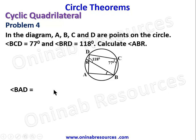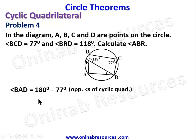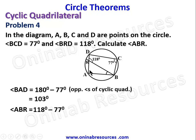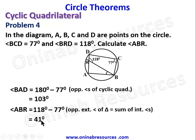Since ABCD is a cyclic quadrilateral, angle BAD equals 180 minus 77 degrees — opposite angles of a cyclic quadrilateral — giving 103 degrees. Then angle ABR equals 118 minus 77 degrees, because the exterior angle of a triangle equals the sum of the two non-adjacent interior angles. This gives ABR equals 41 degrees.